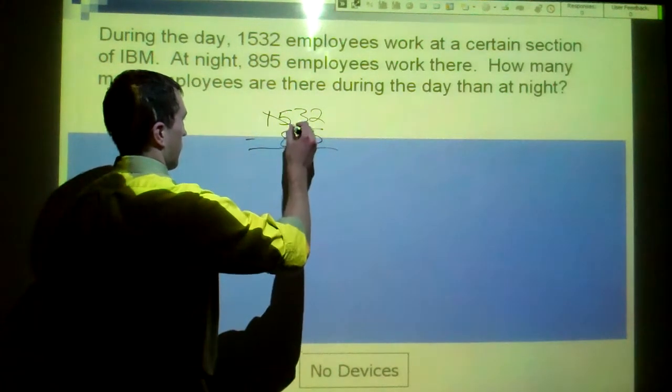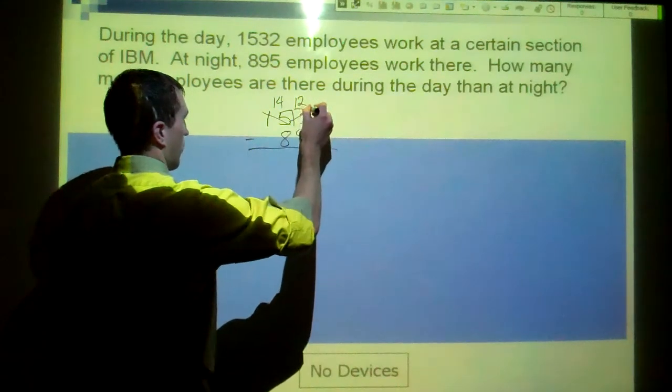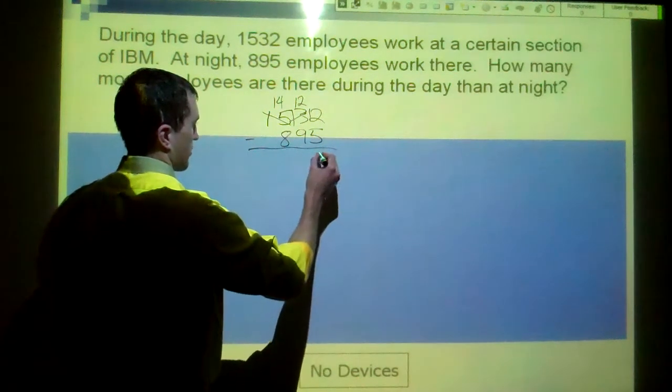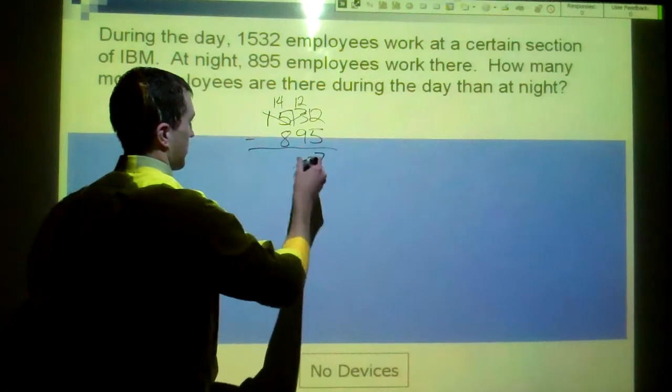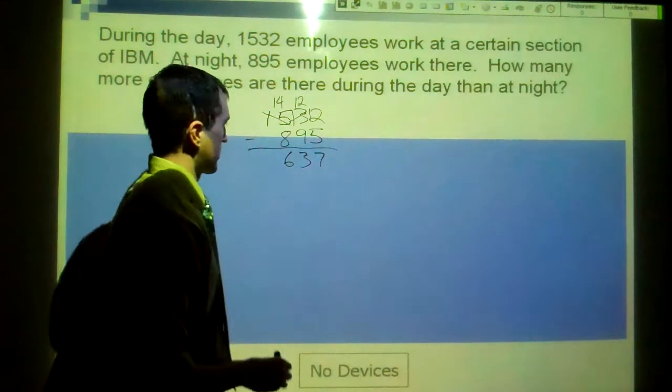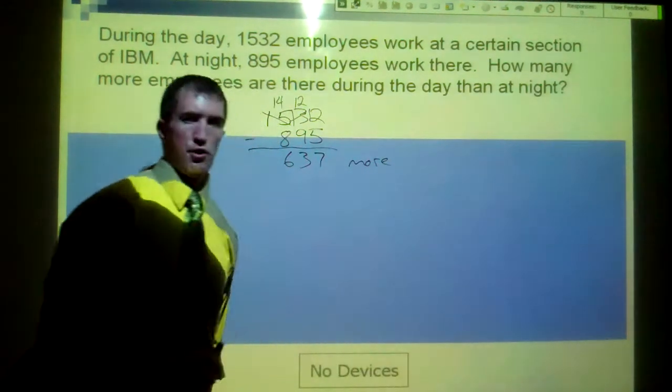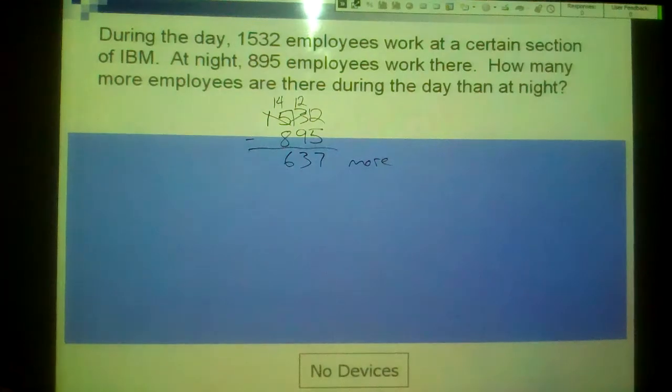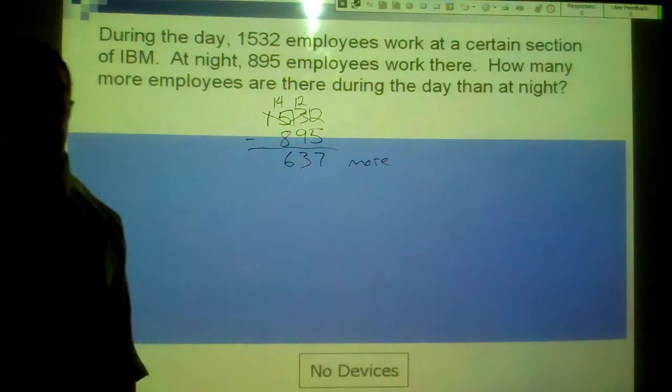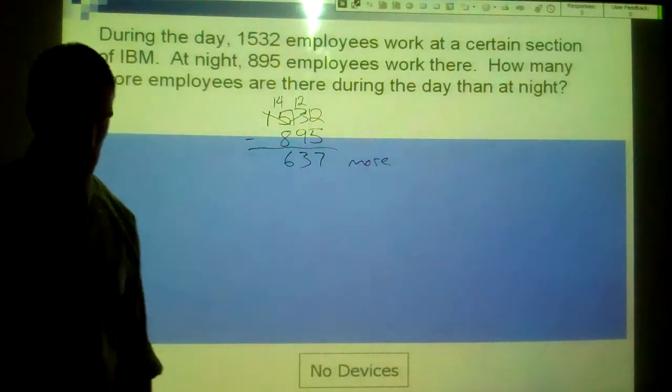We go here, 15, 12 minus 5 is 7, 12 minus 9 is 3, 14 minus 8 is 6. So 637 more people during the day, during the day than at night. That's how we would set that one up. Then my students would have typed in 637 and sent it and I would have started.